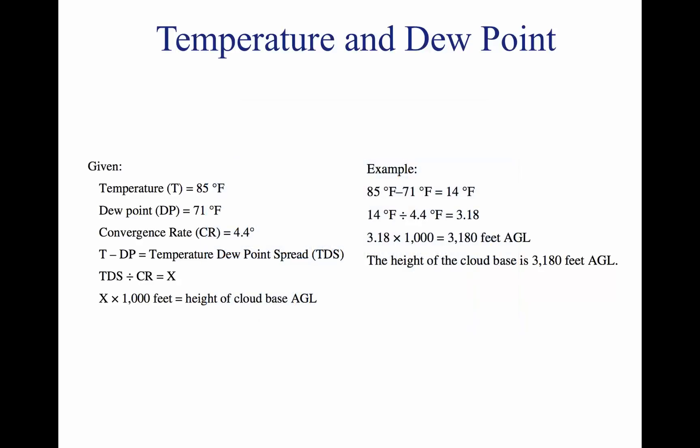As moist, unstable air rises, clouds often form at the altitude where temperature and dew point reach the same value. When lifted, unsaturated air cools at the rate of 5.4 degrees Fahrenheit per thousand feet, and the dew point temperature decreases at the rate of 1 degree Fahrenheit per thousand feet. This results in a convergence of temperature and dew point at a rate of 4.4 degrees Fahrenheit. Apply the convergence rate to the reported temperature and dew point to determine the height of the cloud base. With an outside air temperature of 85°F at the surface and a dew point of 71°F at the surface, the spread is 14 degrees. Divide the temperature/dew point spread by the convergence rate of 4.4 degrees Fahrenheit and multiply by 1,000 to determine the approximate height of the cloud base.